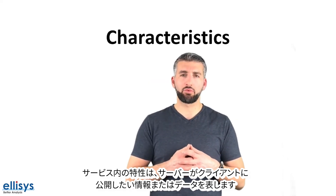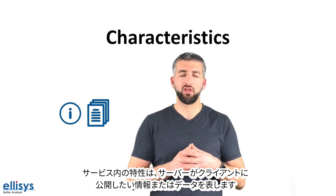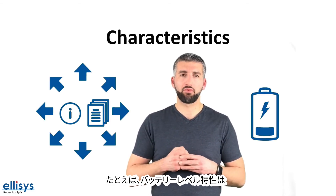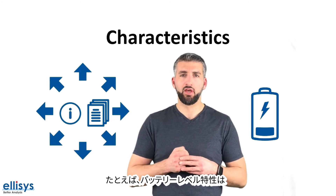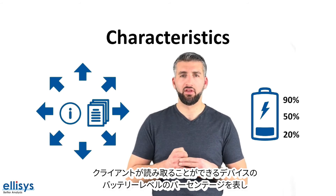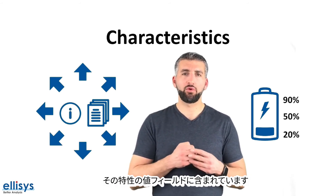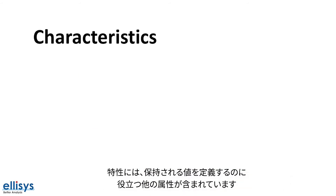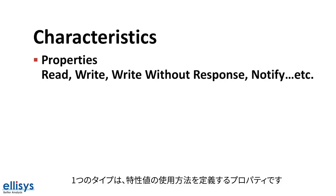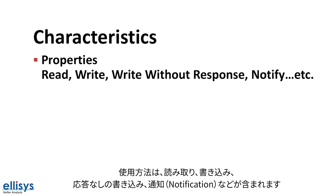A characteristic within a service represents a piece of information or data that the server wants to expose to a client. For example, the battery level characteristic represents the battery level percentage in a device, which can be read by a client and is contained in the value field of that characteristic. A characteristic contains other attributes that help define the value it holds. One type is properties, which define how a characteristic value can be used, such as read, write, write without response, and notify.